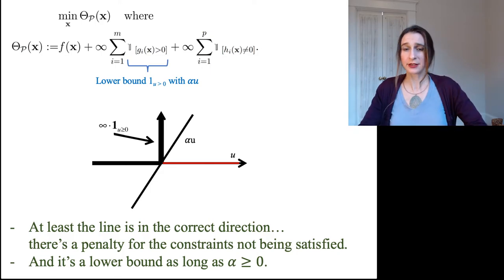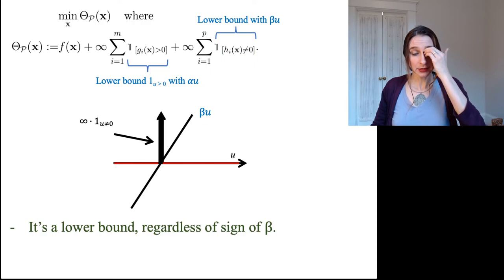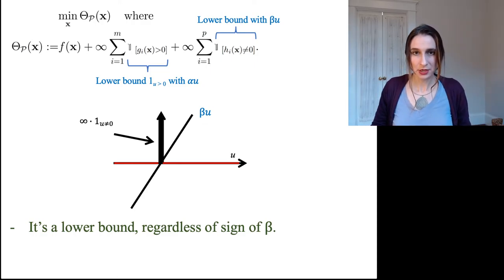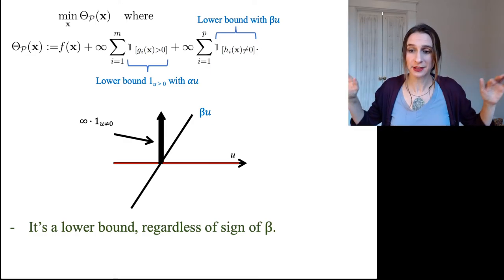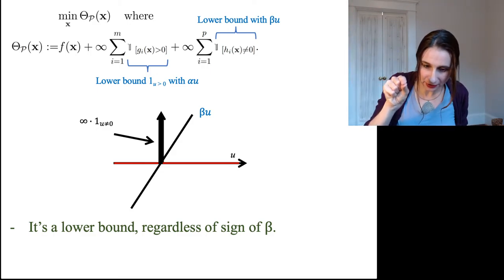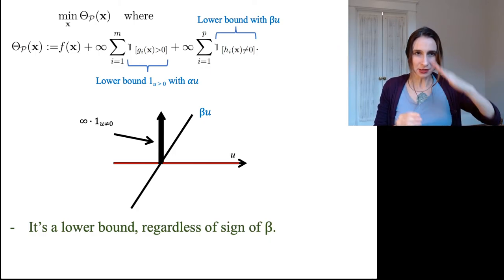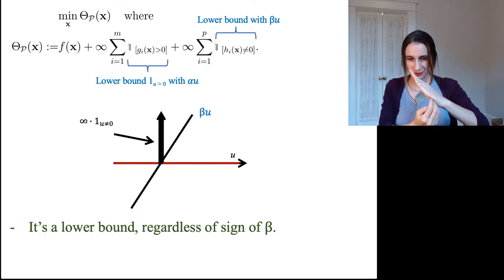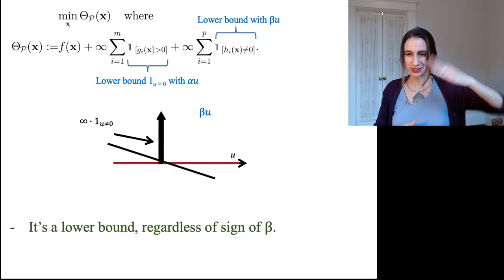Okay, so let's work on the h constraints now. So remember, for the h constraints, h has to equal zero. So this is a function that is infinite, except at the point zero. So it's infinite everywhere, except at zero, at that point. So to lower bound that by a line, as long as that line intersects at zero, as long as it intersects that point zero, we're good. And it doesn't matter whether the slope is positive or negative.